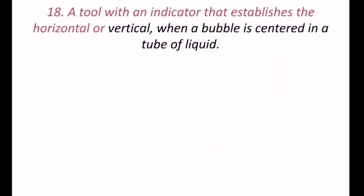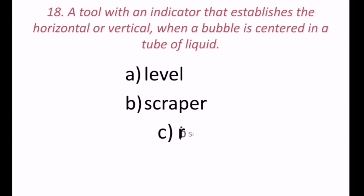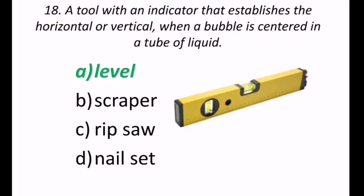18th question, a tool with an indicator, that establishes the horizontal or vertical, when a bubble is concentrated, or centered in a tube of liquid. So may be level, a scraper, rip saw, a nail set. So the correct answer is level. Level is used to indicate the centeredness.